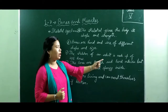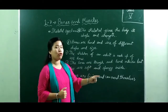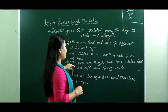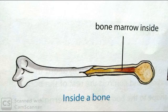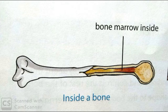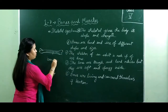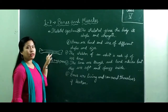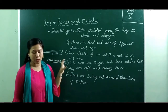Bones are tough and hard on the outside, but soft and spongy on the inside. The inside of a bone contains a jelly-like substance known as bone marrow.